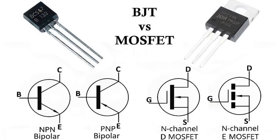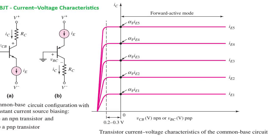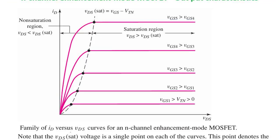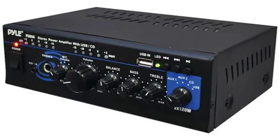To recap: BJTs are current-controlled, slower, and great for analog amplification. MOSFETs are voltage-controlled, faster, and ideal for switching and power applications. A real-world example: a BJT might be used in the input stage of an audio amplifier, while a MOSFET will be used in your laptop charger or inside your CPU.